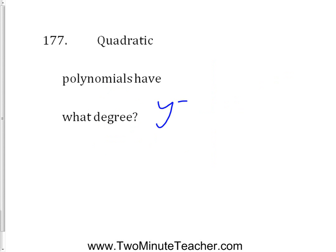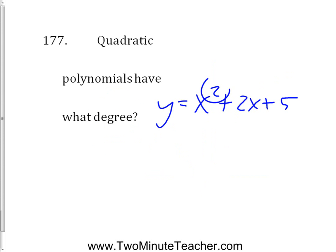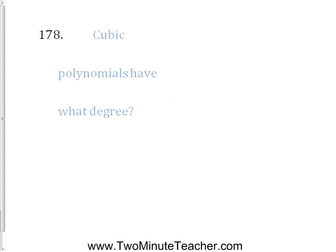Quadratic polynomials have what degree? Quadratics look like x squared plus 2x plus 5 — they form a parabola. The degree of a quadratic is always 2 because it's always got an x squared in it, and the x squared term is always the biggest. A cubic has what degree? Cubic is like y equals x to the third. If it's a cubic polynomial, its biggest degree is degree 3 — for example, x cubed plus 2x squared plus x plus 1.